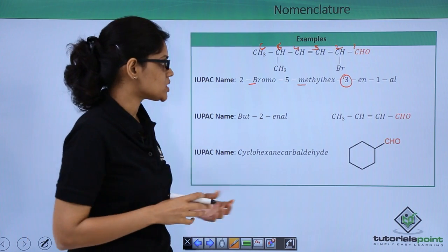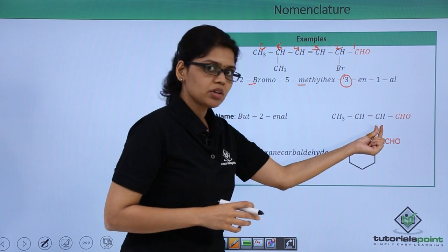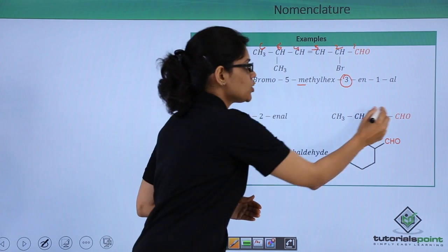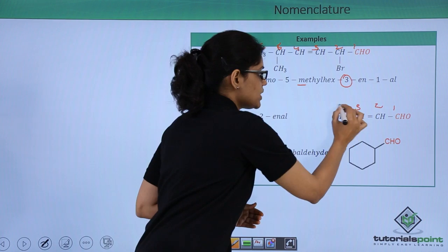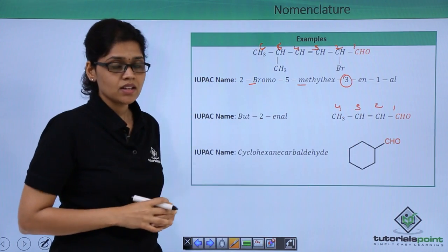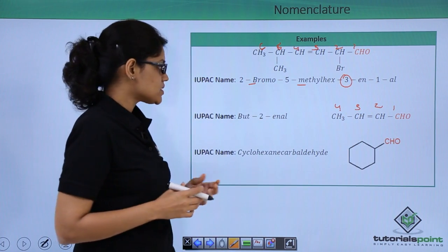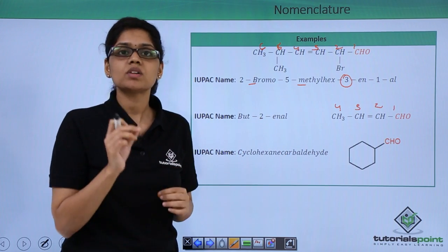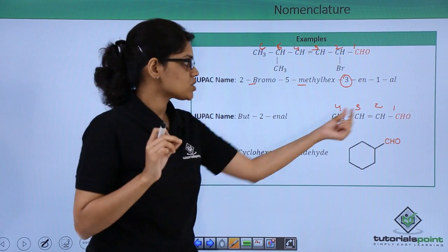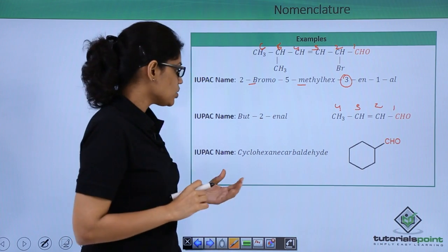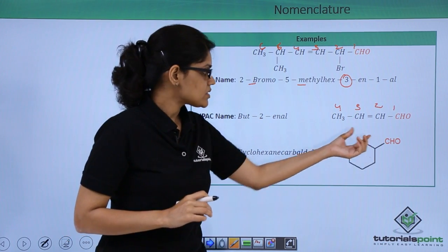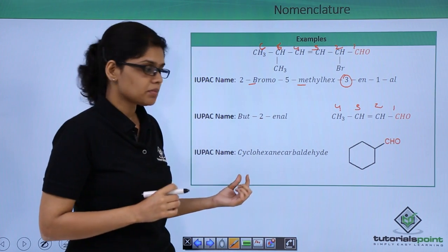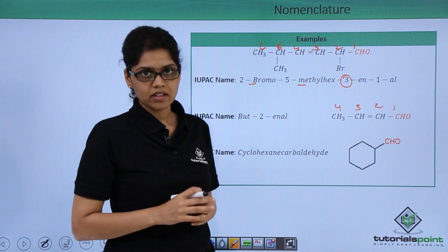The second compound is CH3-CH=CH-CHO. Numbering begins from the carbon of the aldehyde group: 1, 2, 3, and 4. The IUPAC name is but-2-en-al, or but-2-en-1-al if we specify the position of CHO. The third structure is a cyclohexane ring with a CHO group attached, so the IUPAC name is cyclohexane carbaldehyde.